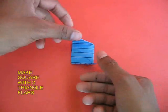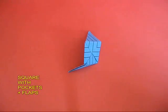So on one side you will have the two flaps and the plain square. On the other side you will have four pockets.